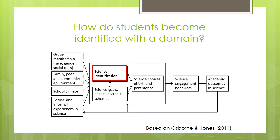These factors influence students' science identification, as well as their science goals, beliefs, and self-schemas, which then influence, and are influenced by, their science choices, effort, and persistence. On the right-hand side of this figure, you can see that these factors affect students' science engagement and academic outcomes, which then loop back to affect other variables in a cyclical manner.